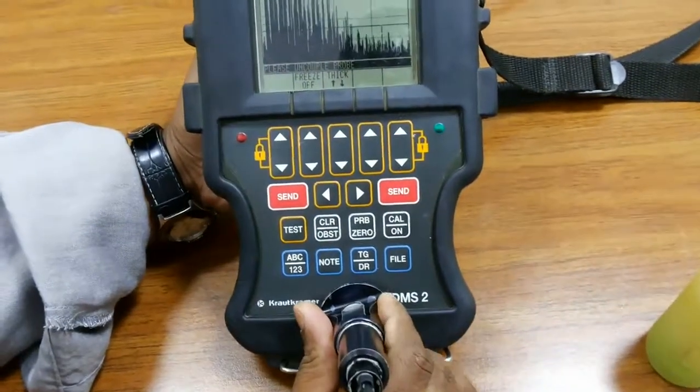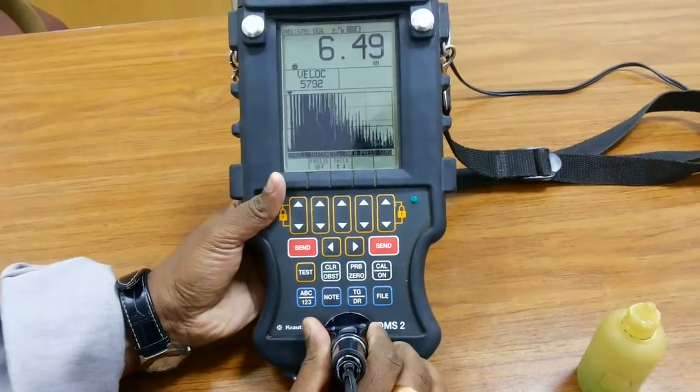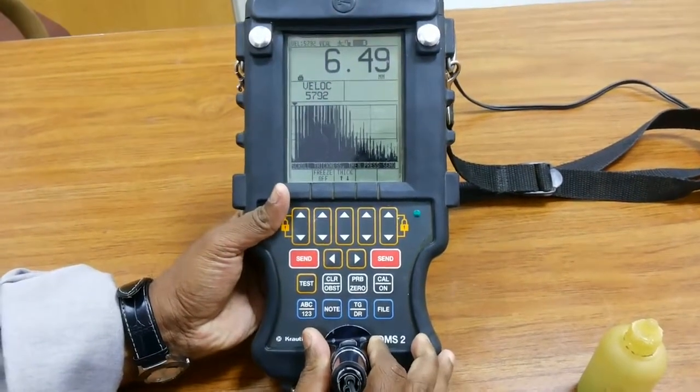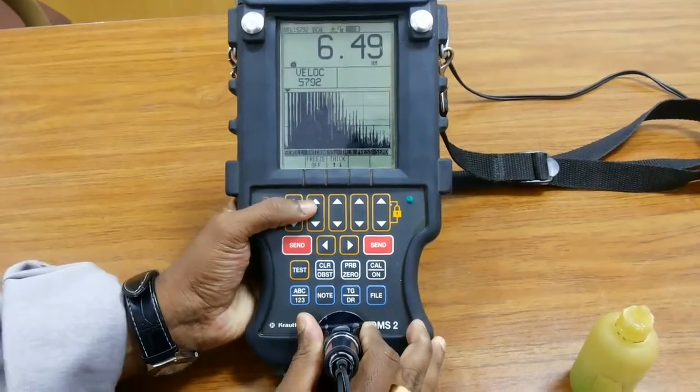Now place the probe on the coupling. It's showing 6.49mm. This block is 6.5mm thickness, so we need to adjust it.